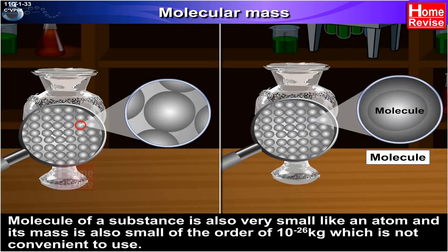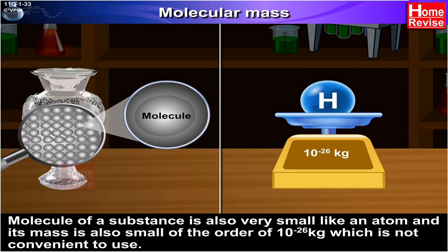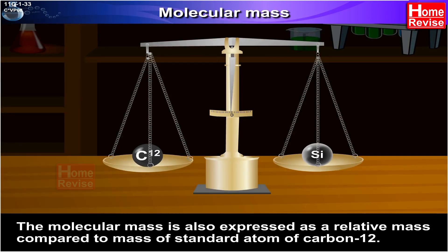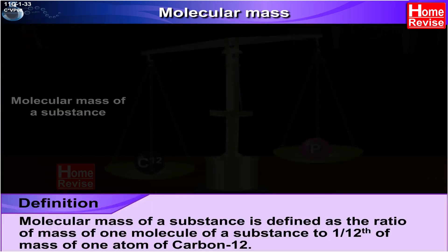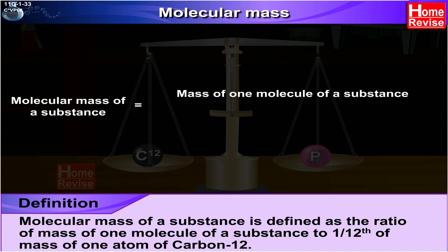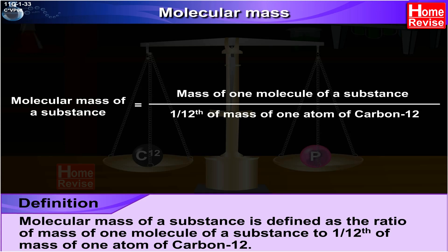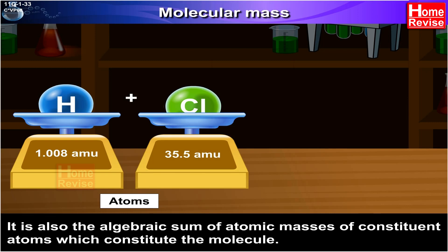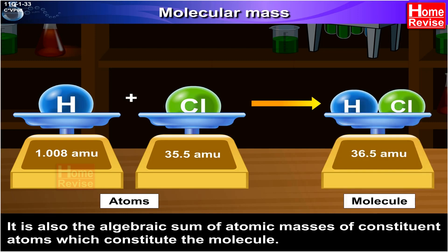Molecular mass. A molecule of a substance is also very small, like an atom, and its mass is also small — of the order of 10 raised to minus 26 kilograms — which is not convenient to use. The molecular mass is also expressed as a relative mass compared to the mass of a standard atom of carbon-12. Molecular mass of a substance is defined as the ratio of mass of one molecule of a substance to one-twelfth of the mass of one atom of carbon-12. It is also the algebraic sum of atomic masses of constituent atoms which constitute the molecule.